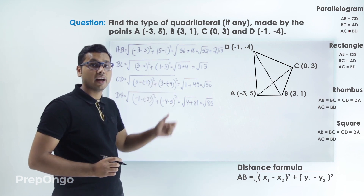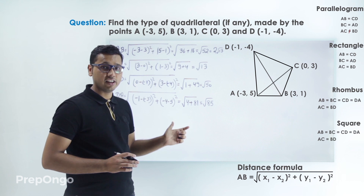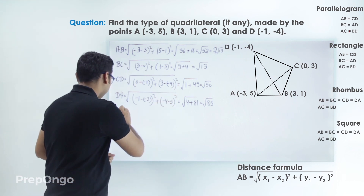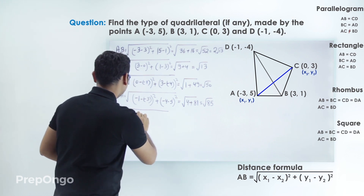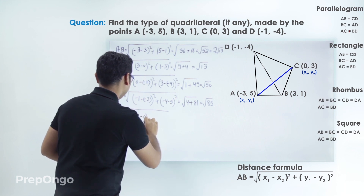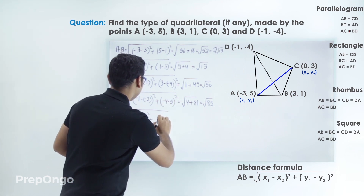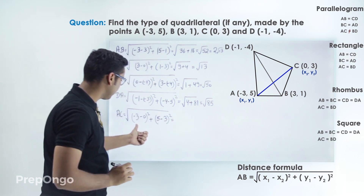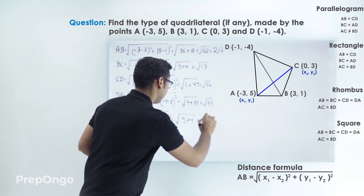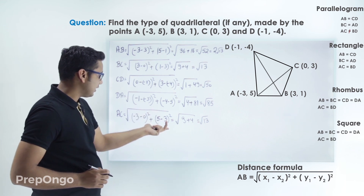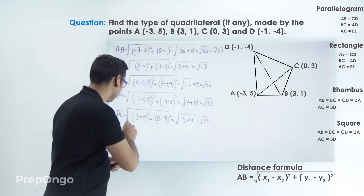Since none of the four lengths are equal, it satisfies none of our conditions. We'll calculate the diagonals as well to find any relation. Let's calculate the length of diagonal AC. Putting the values: (minus 3 minus 0) squared plus (5 minus 3) squared. This gives 3 squared plus 2 squared, which is 9 plus 4, so AC equals root 13.